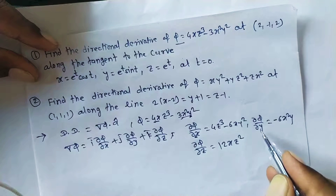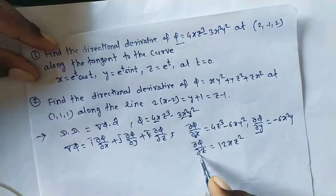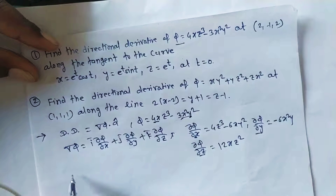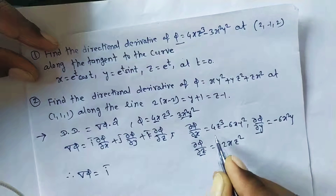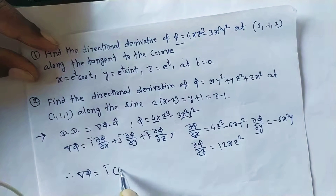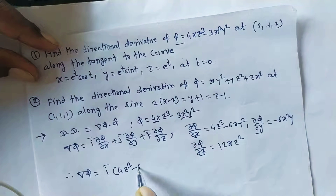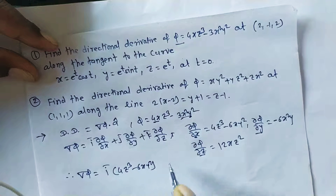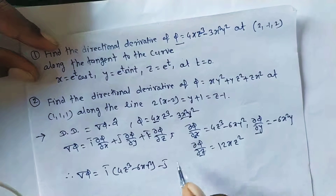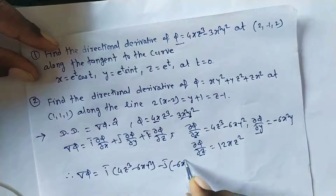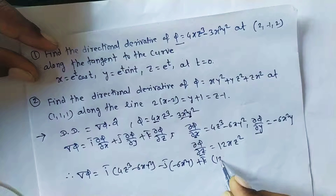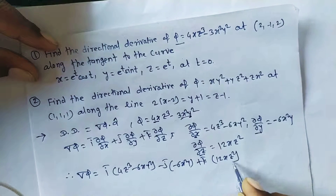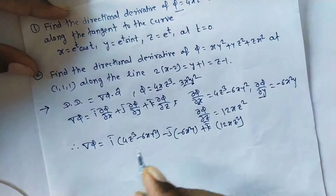Putting these three partial derivatives into ∇φ, we get: ∇φ = î(4z³ − 6xy²) + ĵ(−6x²y) + k̂(12xz²). This is ∇φ at point (x, y, z).